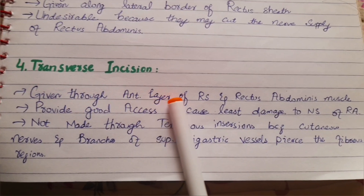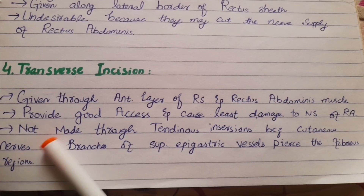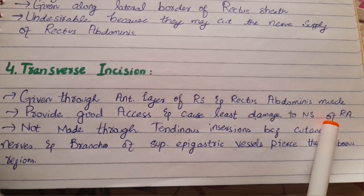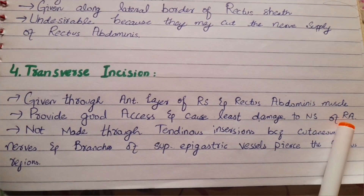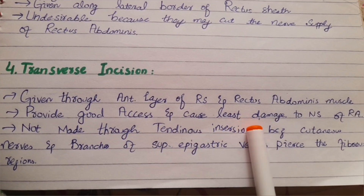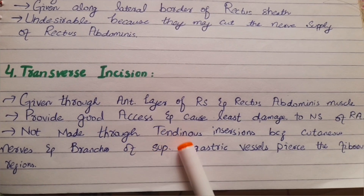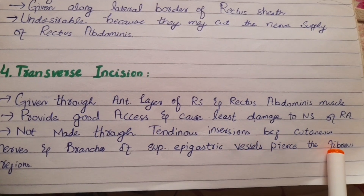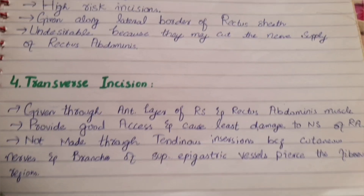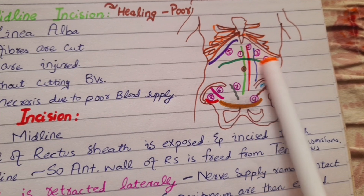At number four we have the transverse incisions, given through the anterior layer of the rectus sheath and rectus abdominis muscle. They provide good access and cause the least damage to the nerve supply of the rectus abdominis muscle. Transverse incisions are not made through the tendinous insertions of the rectus abdominis muscle because the cutaneous nerves and branches of the superior epigastric vessels pierce these fibrous regions.